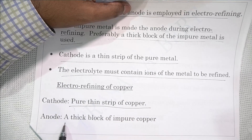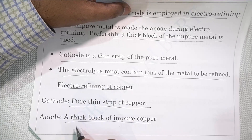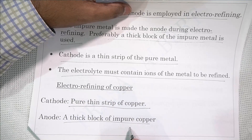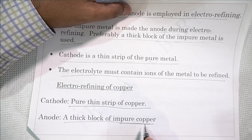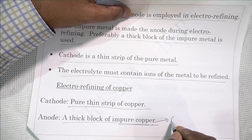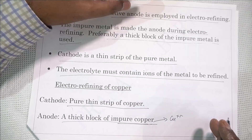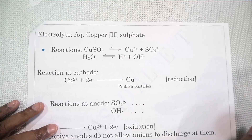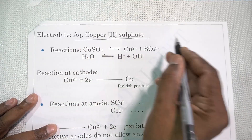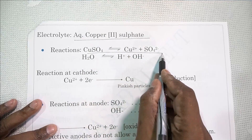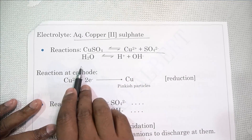The anode is a thick block of impure copper. Why a thick block? Because it will decrease in mass and get used up, as impure copper loses its ions. The impure residue will settle down. The electrolyte must contain copper ions, so we take aqueous copper sulfate, which splits into Cu²⁺ ions and SO₄²⁻ ions. Water splits to give H⁺ ions and OH⁻ ions.